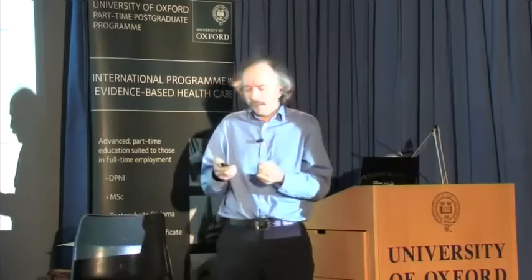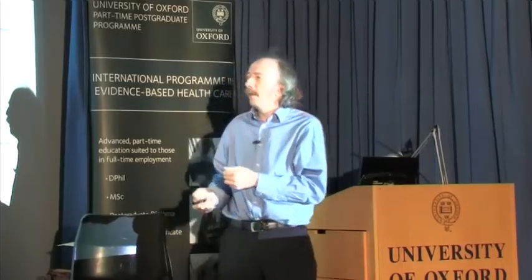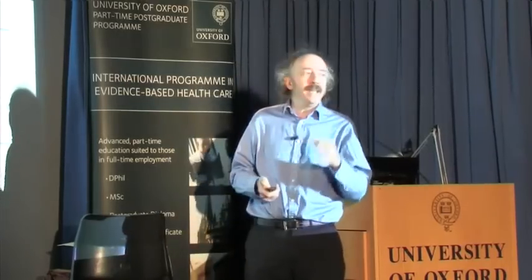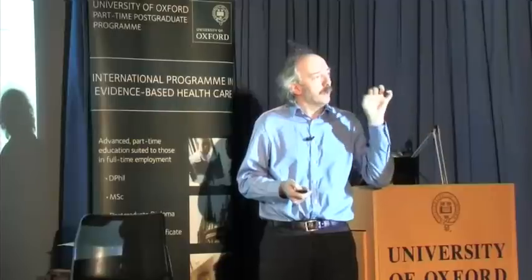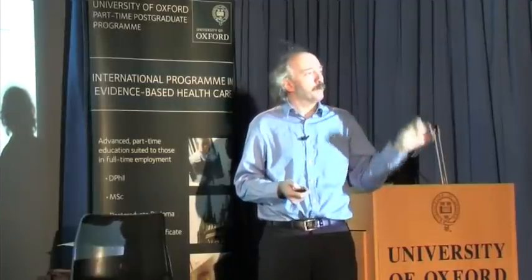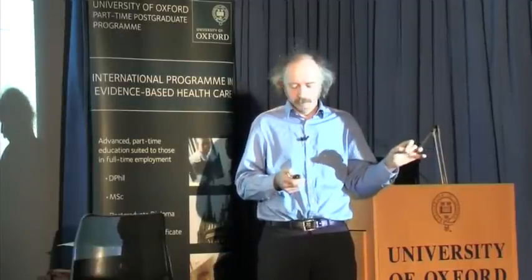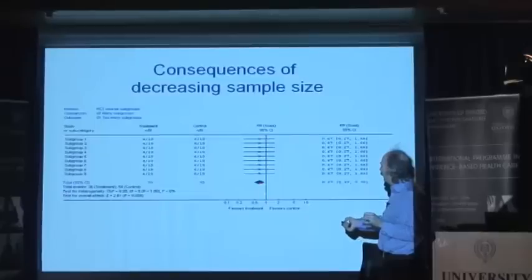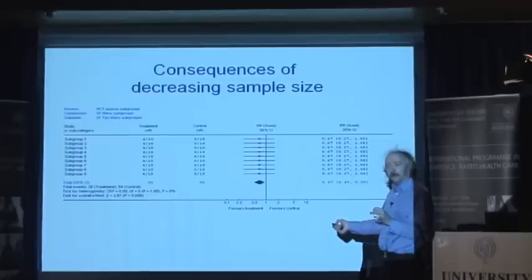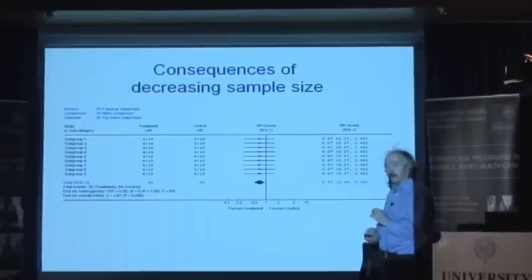So it's a big problem if we say we need to identify whether it works for this patient. Should we believe the average or should we believe the subgroup, when it looks like this?